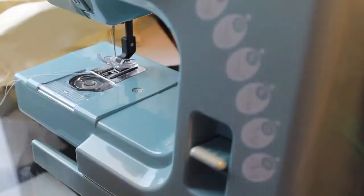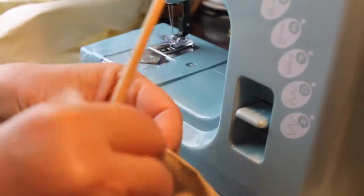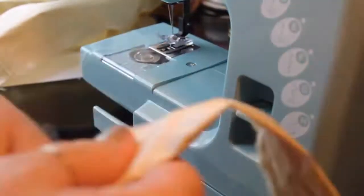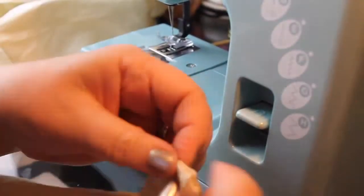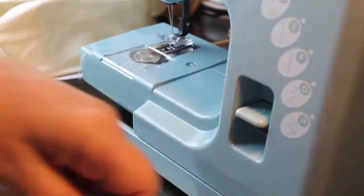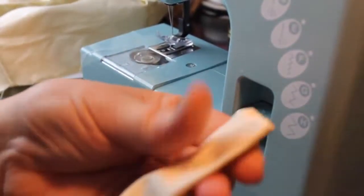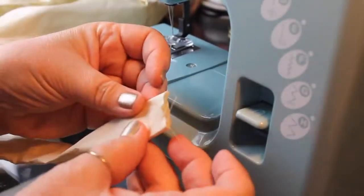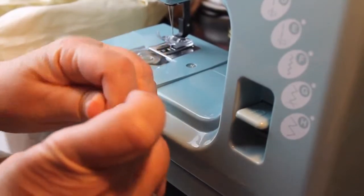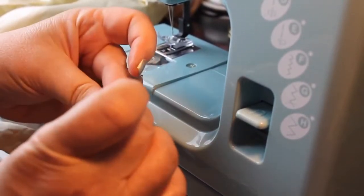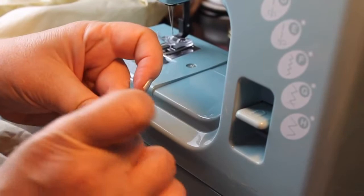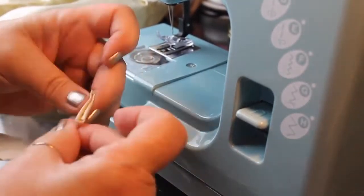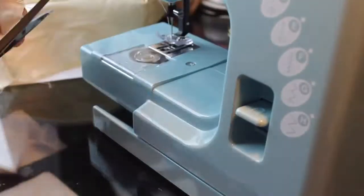I've turned the obi and I'm just folding in the one end that was open where I turned it, and then I'm going to sew a seam across that end to close it off, and that's our completed obi.